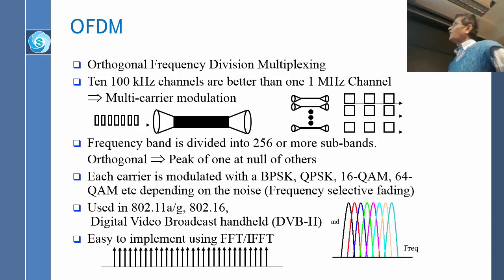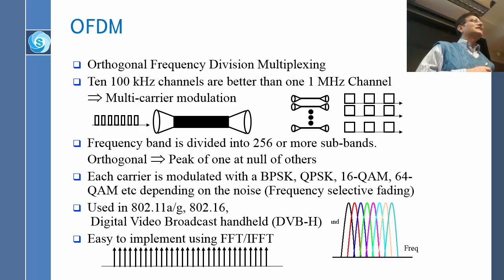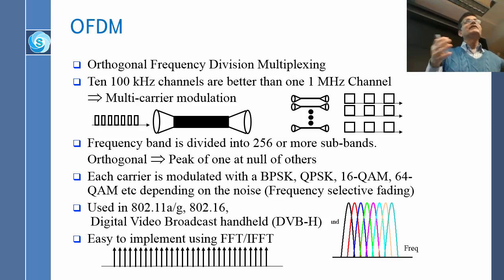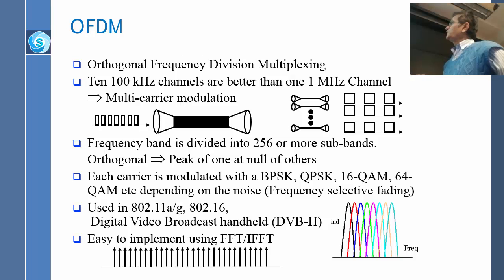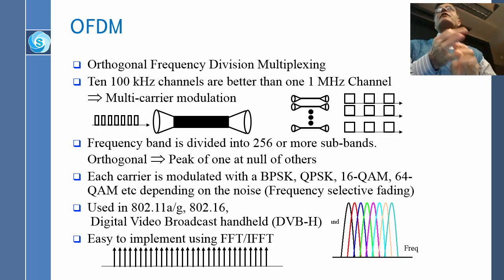This is used now everywhere. Ever since its discovery, OFDM is used on wired networks as well as wireless networks. It is used in DSL — the wired network that comes to your home — and in all wireless networks including LTE, WiMAX, and 802.11. It is easy to implement using fast Fourier transform and inverse fast Fourier transform. We can now handle thousands of carriers using FFT chips, which are called digital signal processing chips.